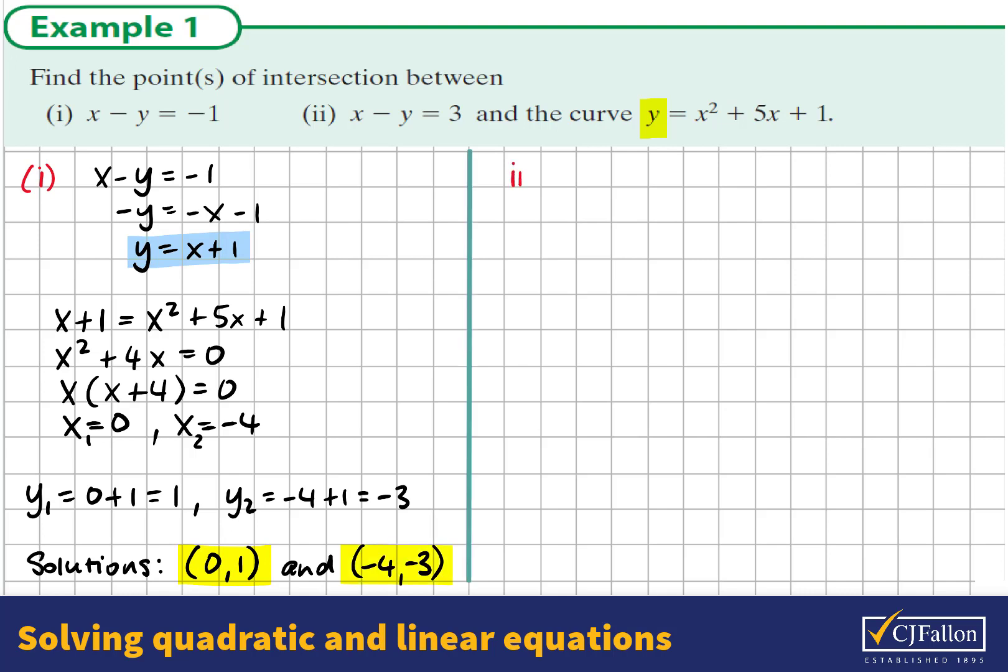We're going to repeat this process with the second problem. It's x minus y equals 3. So I'm going to rewrite this in terms of y. Taking x from both sides of the equation, we have negative y equals negative x plus 3. And multiplying by negative 1, y equals x minus 3.